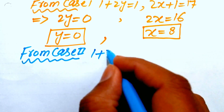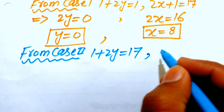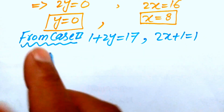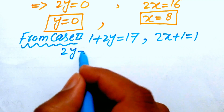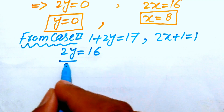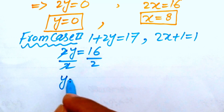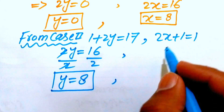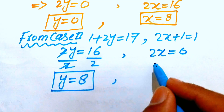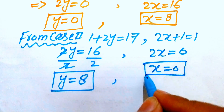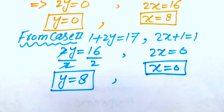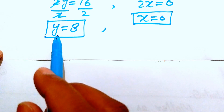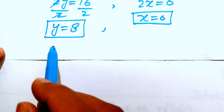Solving Case 2: from (1+2y)=17, moving 1 to the right gives 2y=16, so y=8. From (2x+1)=1, moving 1 to the right gives 2x=0, so x=0. In Case 2, x equals 0 and y equals 8.